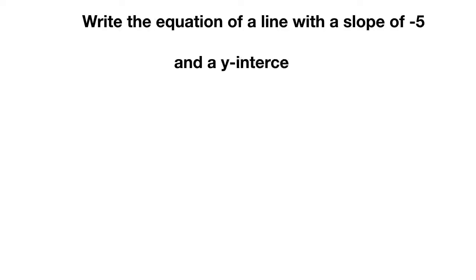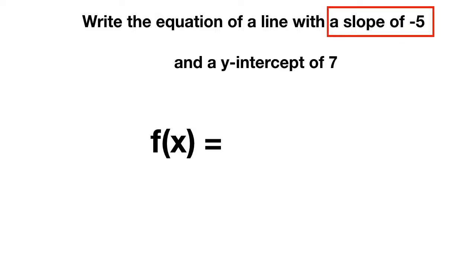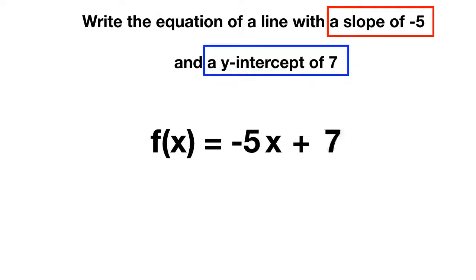Now it's time for you to practice on your own. Write the equation of a line with a slope of negative 5 and a y-intercept of 7. You'll write your function f of x is equal to the slope, negative 5x, plus the y-intercept, plus 7. f of x is equal to negative 5x plus 7.